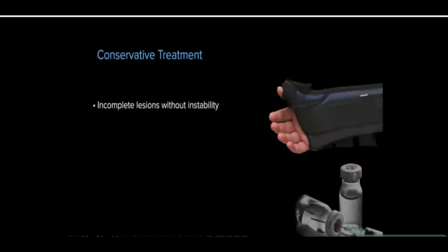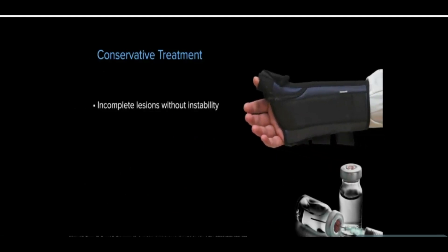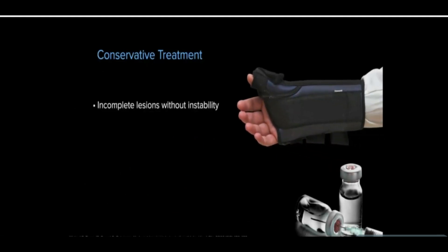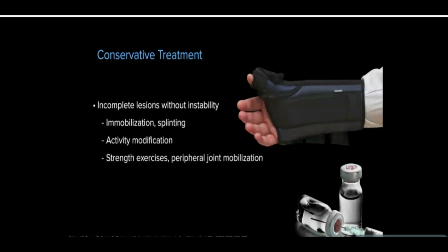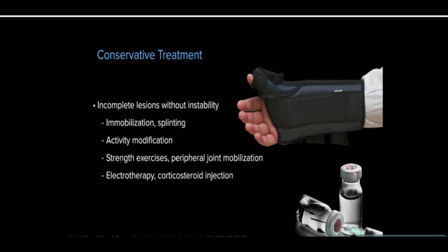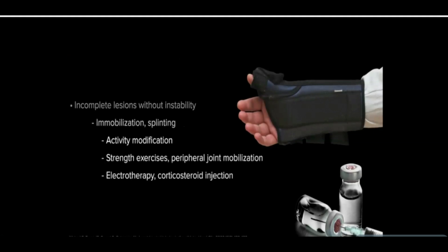Incomplete lesions without instability can initially be managed with conservative, non-operative treatments. Therapies include immobilization and splinting, activity modification, strengthening exercises for grip, peripheral joint mobilization, electrotherapy, and corticosteroid injection.